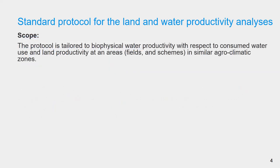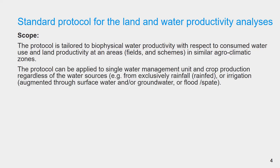The protocol is tailored to biophysical water productivity with respect to consumed water use and land productivity at areas in similar agro-climatic zones. It can be applied to a single water management unit and crop production regardless of the water sources — for example, exclusively rainfall, or irrigation augmented through surface water and/or groundwater.